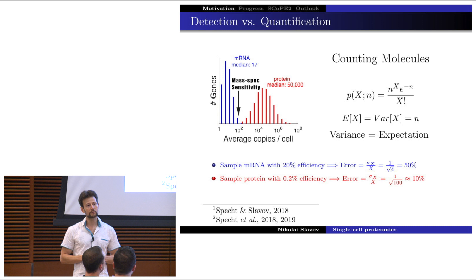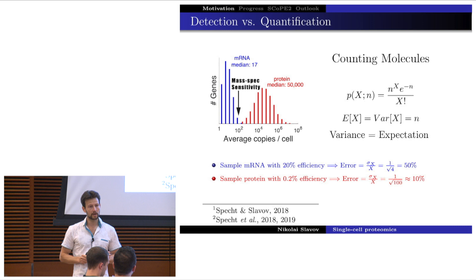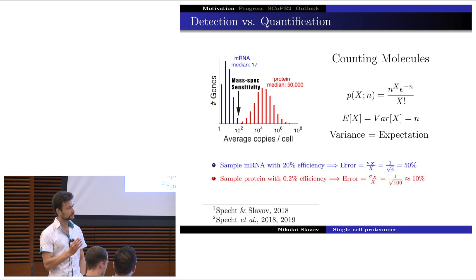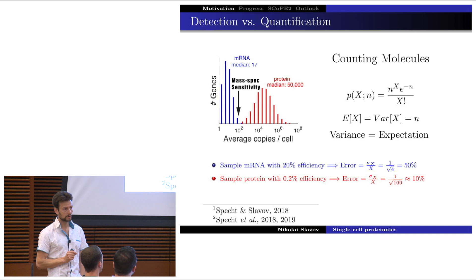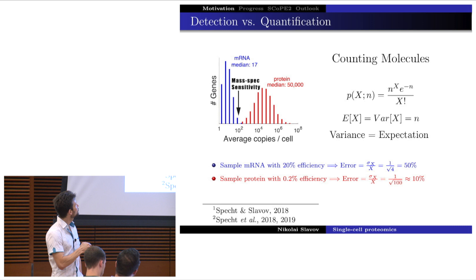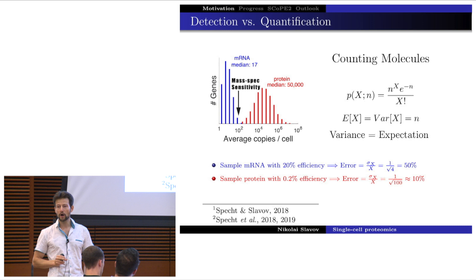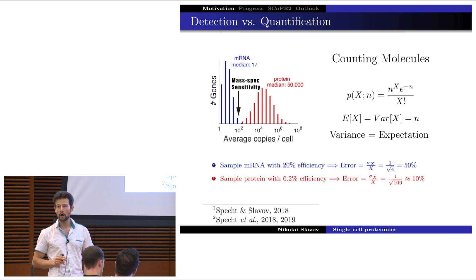This sampling problem is perfectly described by the Poisson distribution. Applying the math to single-cell RNA sequencing — even in the most favorable case with the highest reported efficiency — you end up with about 50% measurement error for median-abundant messenger RNA, assuming impeccable sample preparation and measurement. With proteins being so much more abundant, even at a hundredfold lower sampling efficiency we still obtain much better estimates of their relative abundances. This has been a very inspiring realization, and I'll show empirical evidence that the math bears out.